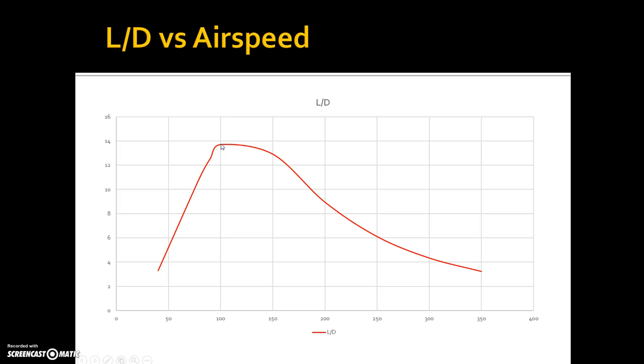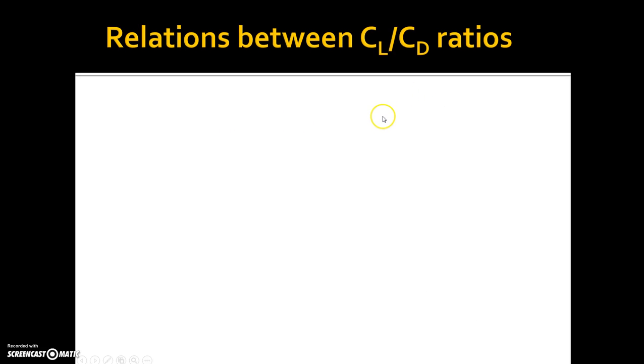But how can I actually numerically calculate that? Well we can begin by expressing what is the lift to drag ratio. So the lift to drag ratio is simply the coefficient of lift over the coefficient of drag, and the coefficient of drag can be broken down into the form drag and parasite drag and the induced drag here.